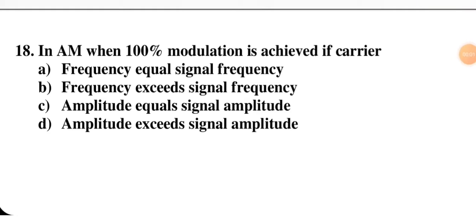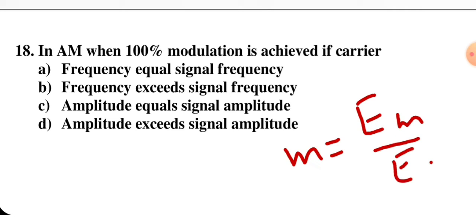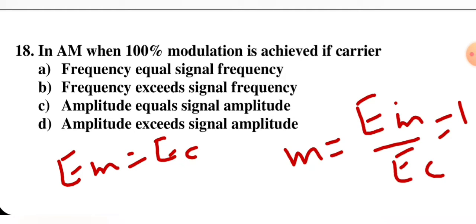Next question: in AM, when 100% modulation is achieved — if carrier frequency equals signal frequency, if carrier frequency exceeds signal frequency, if carrier amplitude equals signal amplitude, or if amplitude exceeds signal amplitude. The modulation index m = E_m / E_c. When m = 1, E_m = E_c, so carrier amplitude equals signal amplitude. Option C is correct.